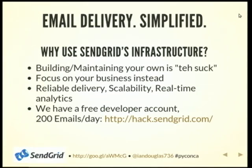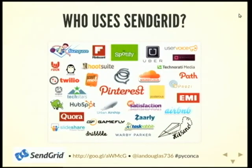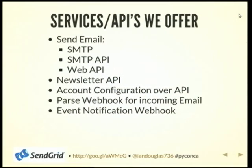We've got all kinds of neat real-time analytics, and we also give you a free developer account where you can send 200 emails a day. I'm not here to pitch the company too much, but Foursquare, Pinterest, Hitsend, Uber, TaskRabbit — all these guys use us. We've also got some Python-friendly partners. If you guys want to deploy to Heroku and so on, they use Python out of the box.